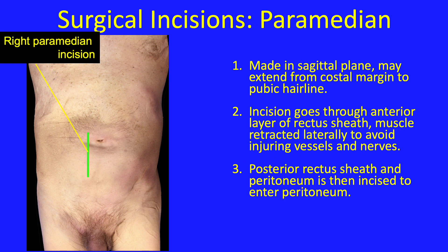The paramedian incisions are made in the sagittal plane and may be extended from the costal margin to the pubic hairline. The incision goes through the anterior layer of the rectus sheath, but then the muscle is retracted laterally to avoid injuring vessels and nerves. The posterior rectus sheath and peritoneum are then incised to enter the peritoneum proper.